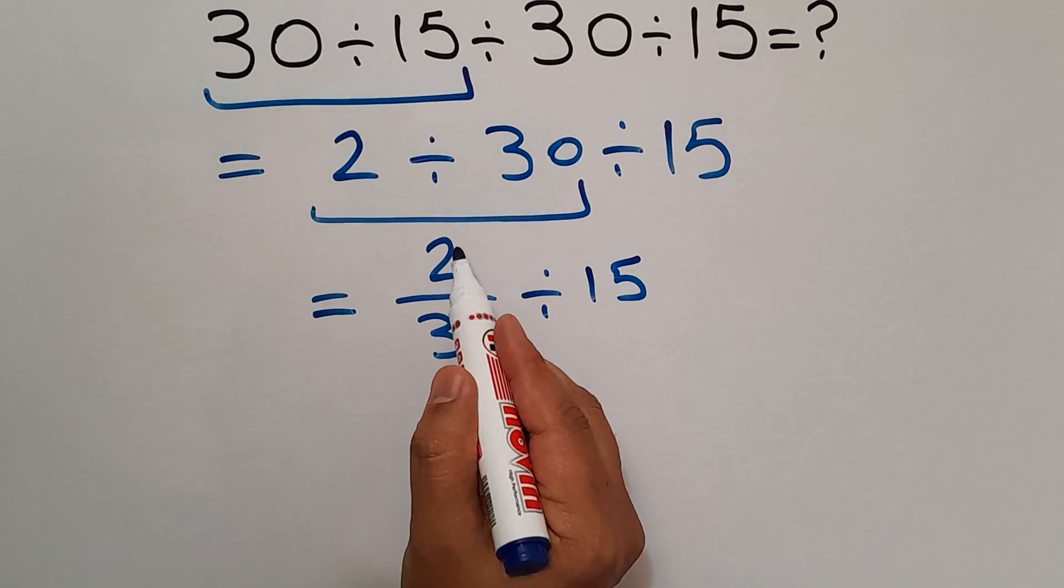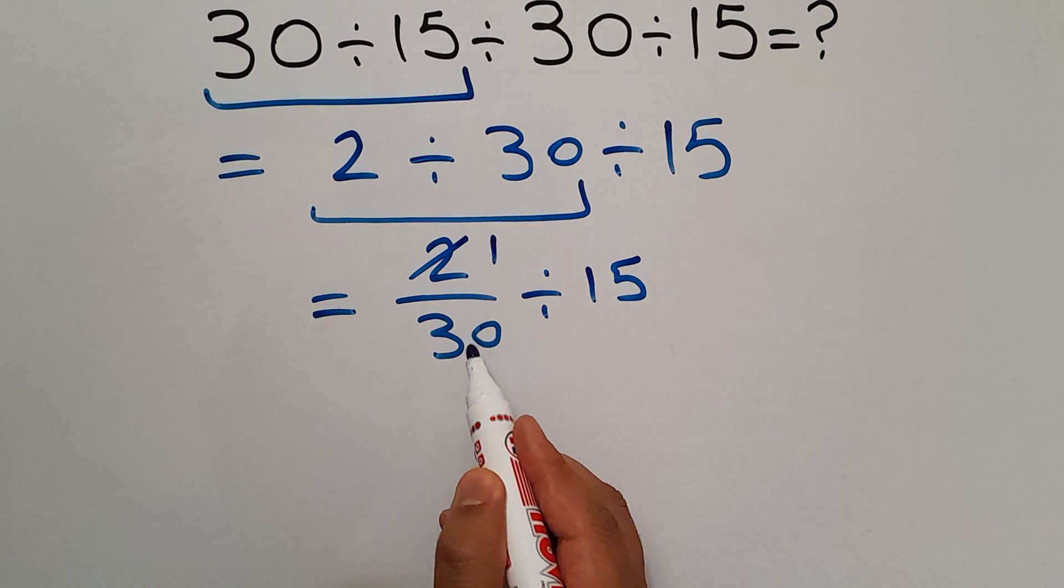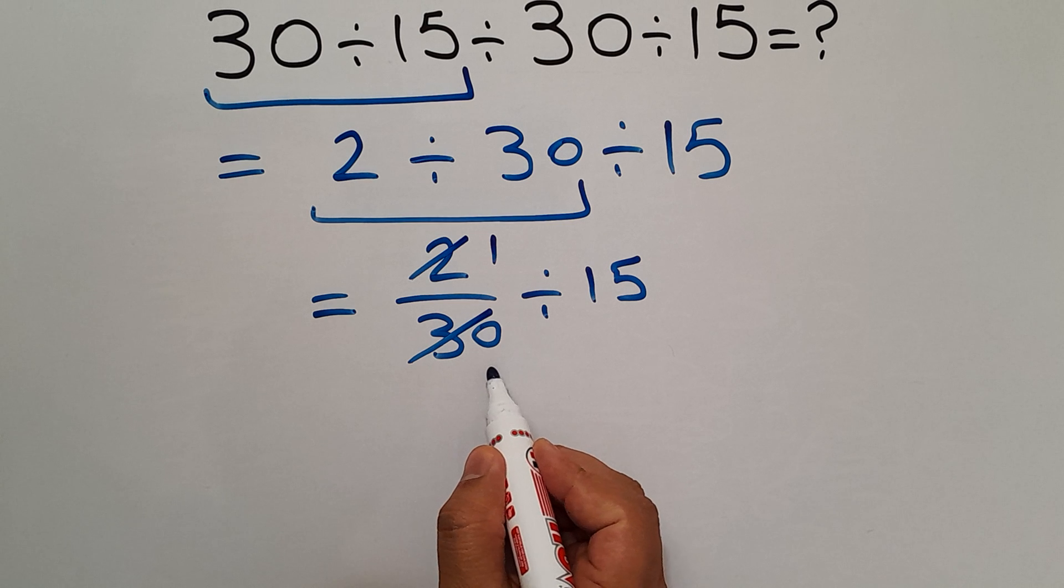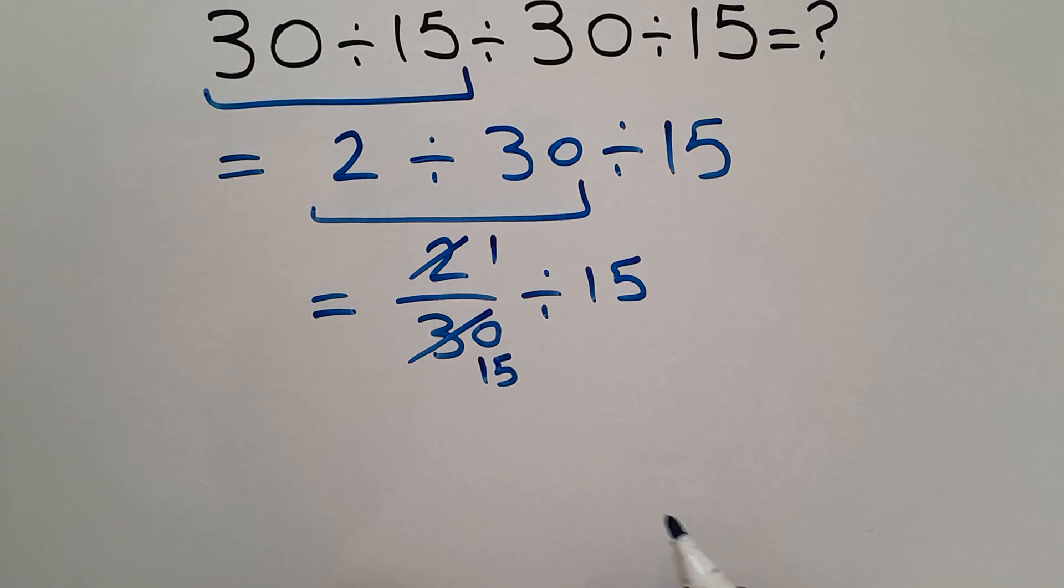Now 2 divided by 2 equals 1 and 30 divided by 2 equals 15. Now we have 1 over 15 divided by 15.